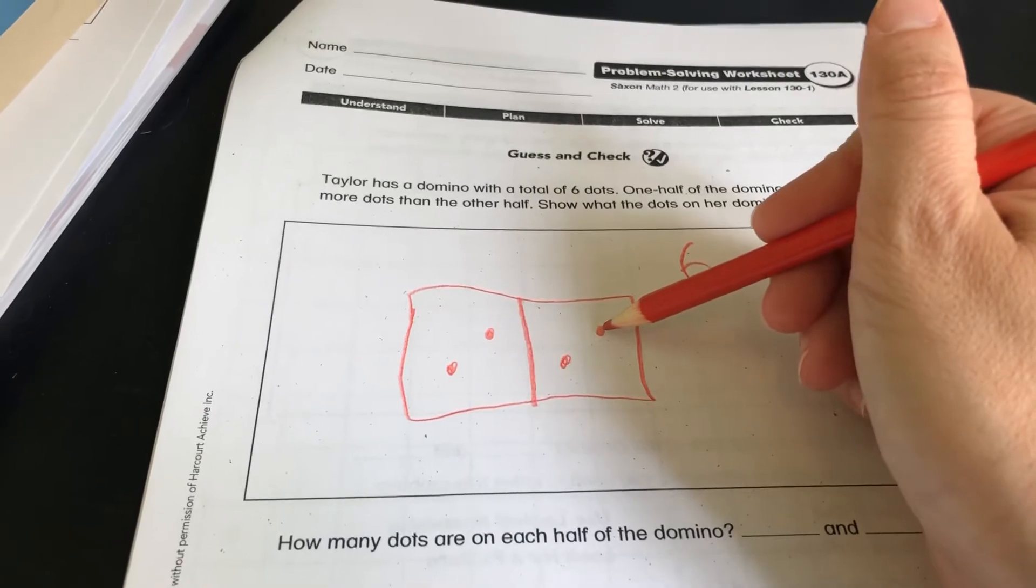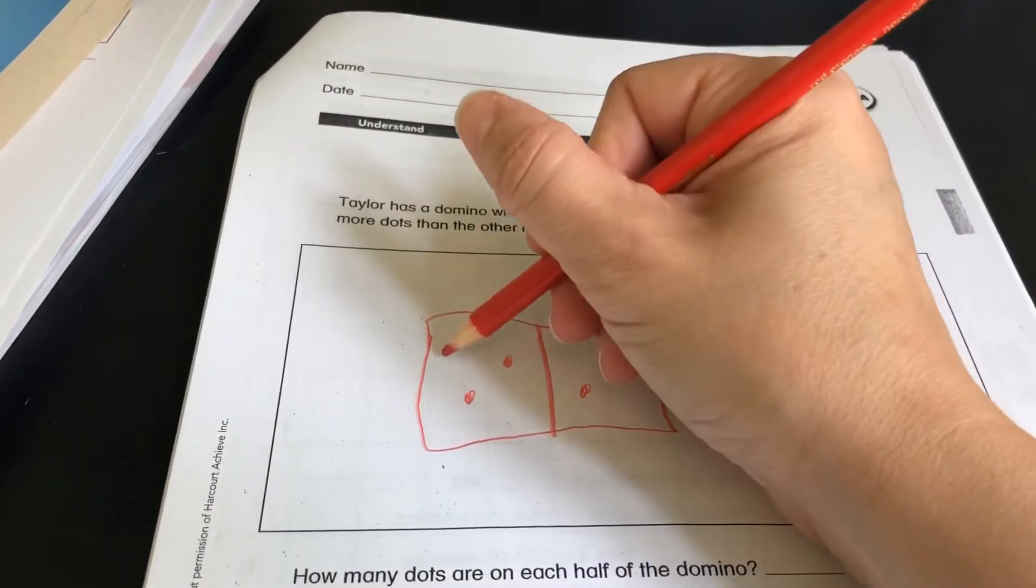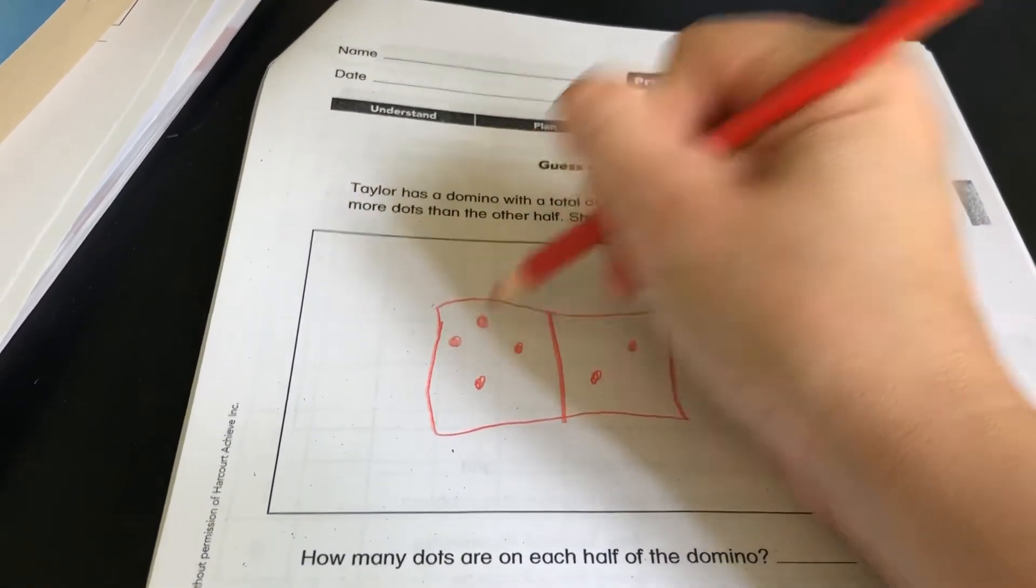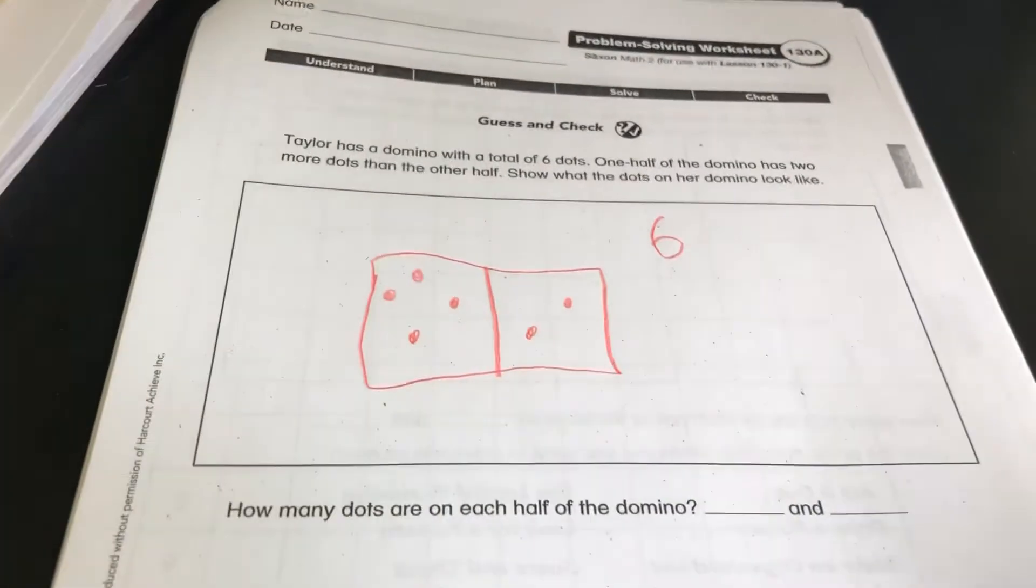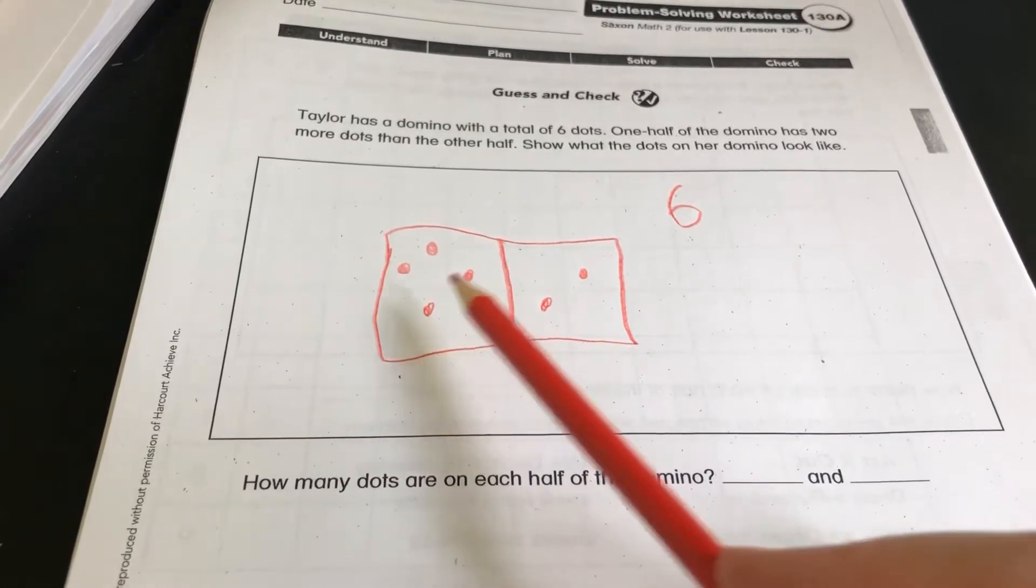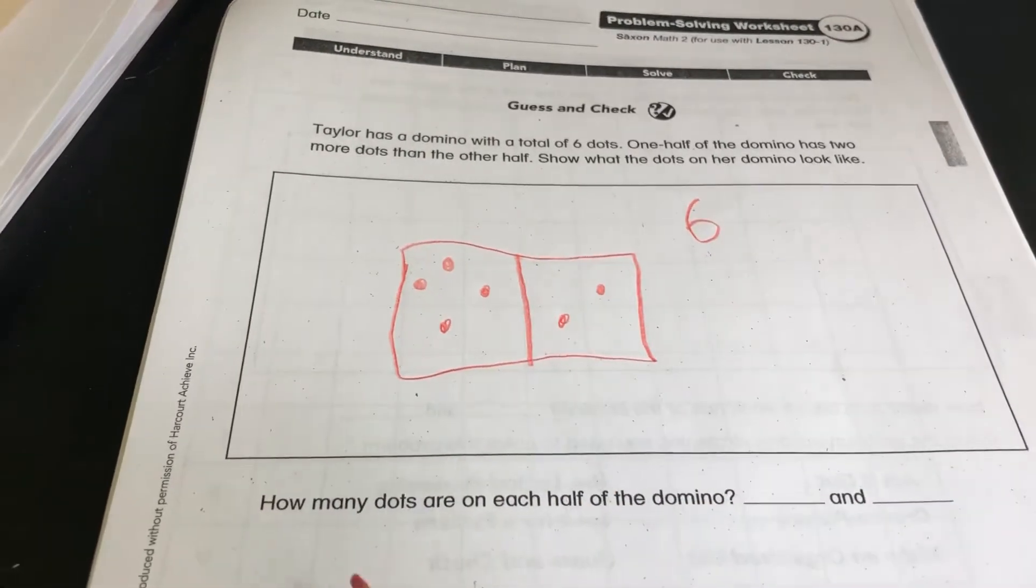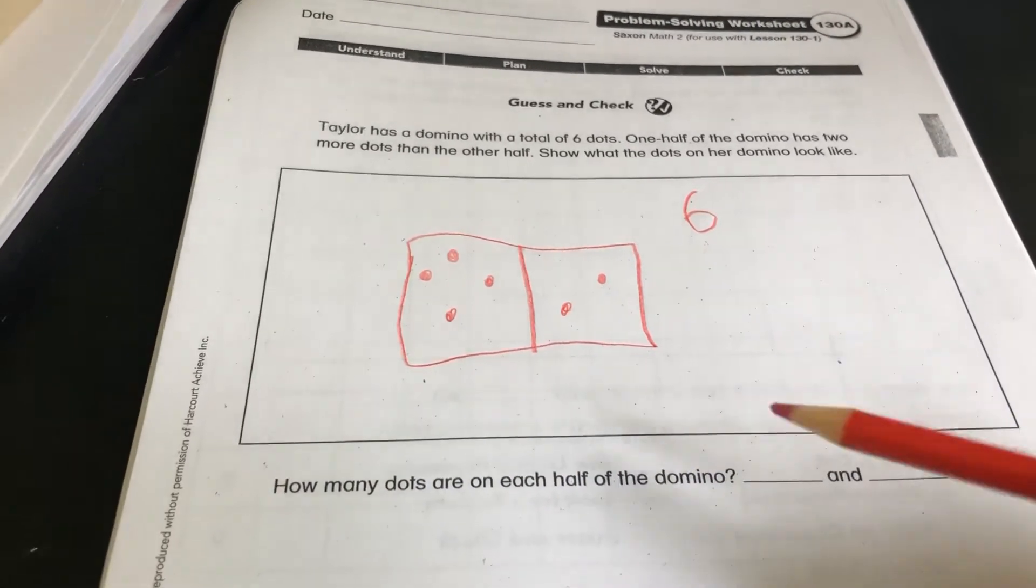And then one side has two more dots than the other side. So if this side has two dots and this side had two more dots. Oh, wait a second. How many dots is this all together? One, two, three, four, five, six.